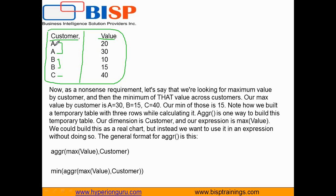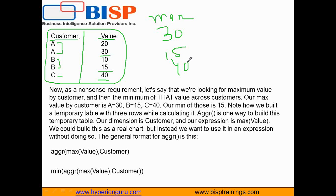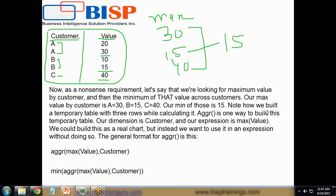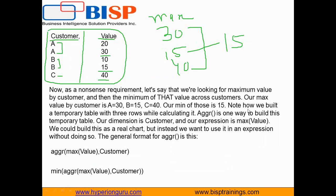The maximum value by customer A is 30, the maximum value by customer B is 15, and the maximum value by customer C is 40. Now if we want to calculate the minimum out of those maximum values, the result would be 15, which is the minimum of 30, 15, and 40.